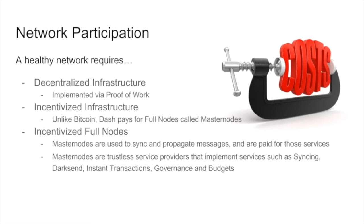How about network participation? This is where we first start to see foundational cracks in the Bitcoin ecosystem. The infrastructure is donated at the expense of the users and companies utilizing the systems, and as costs rise it squeezes out those most vulnerable to those costs, weakening the network as a whole. Dash fixes this with a special class of servers we call our second-tier infrastructure, also known as the masternode network. This is a compensated infrastructure — masternodes provide services to the network such as syncing clients and propagating messages, and they are paid to do this. Any user can run a masternode, and we try to attract the most talented systems administrators and programmers to run this part of our infrastructure.